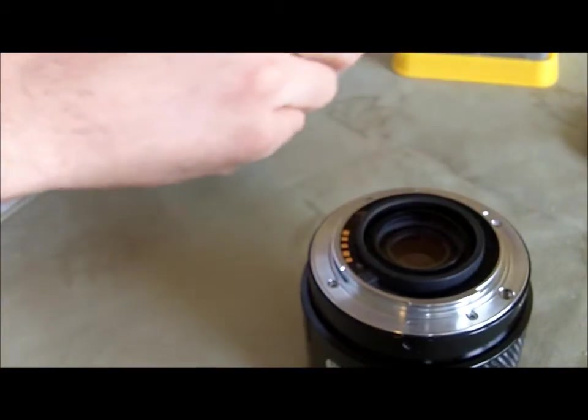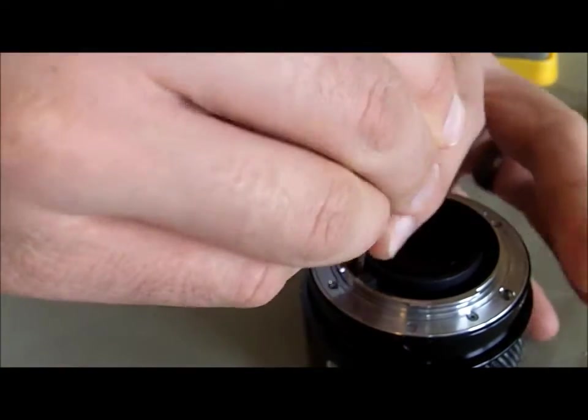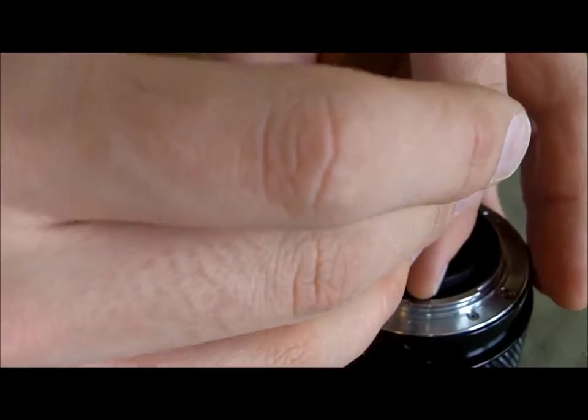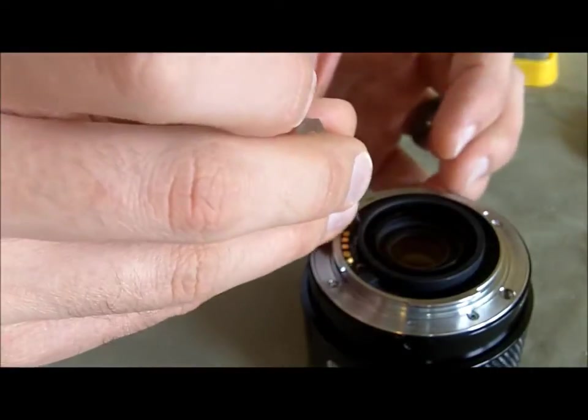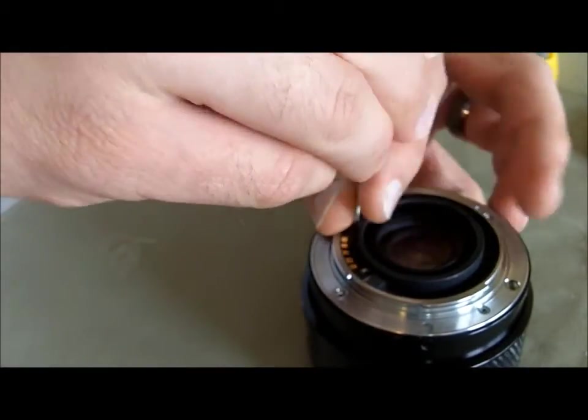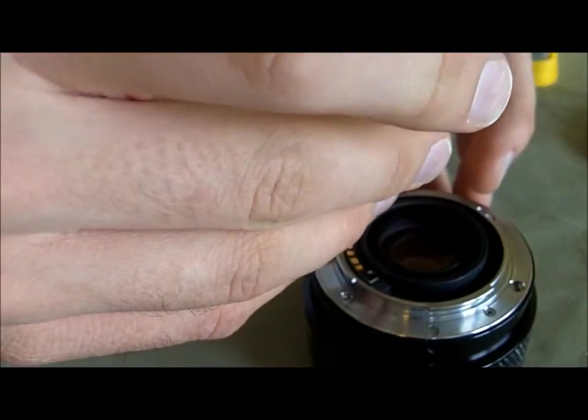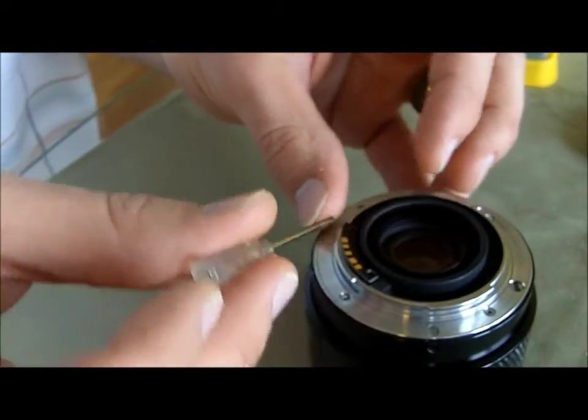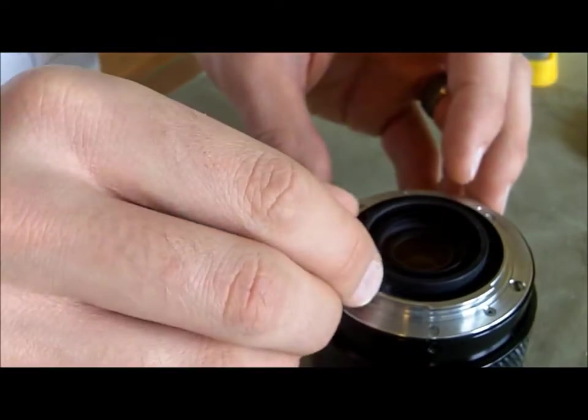Most of these screws and stuff are different sizes, so you don't really have to worry too much about what goes where, because only one size will go here or there. When you take off the contact plate, something you want to be really careful of is the little spring that's under there. It likes to pop right out and it is small and easy to lose.